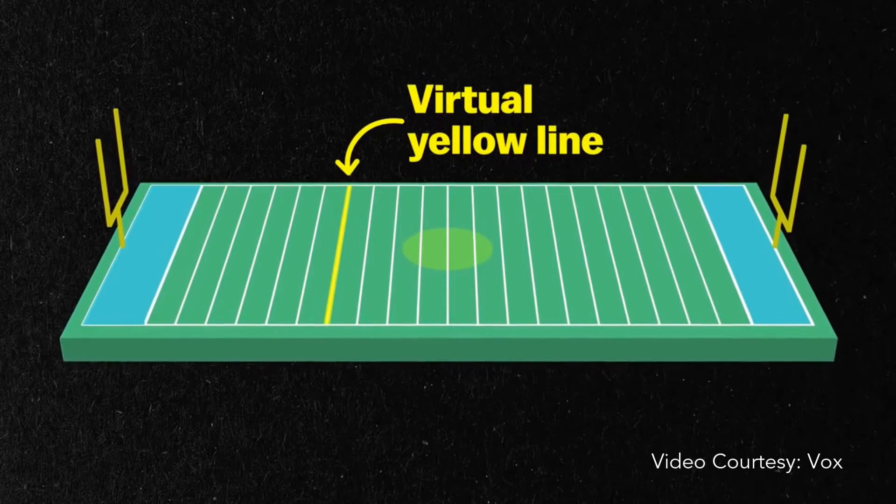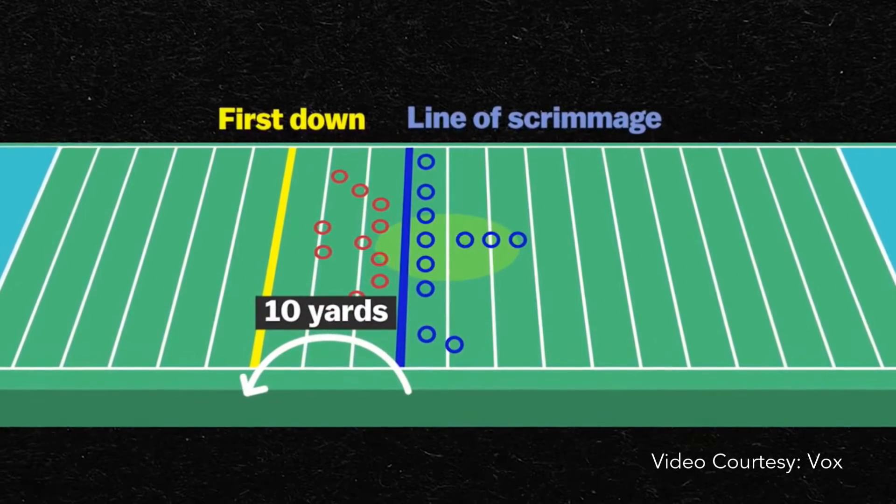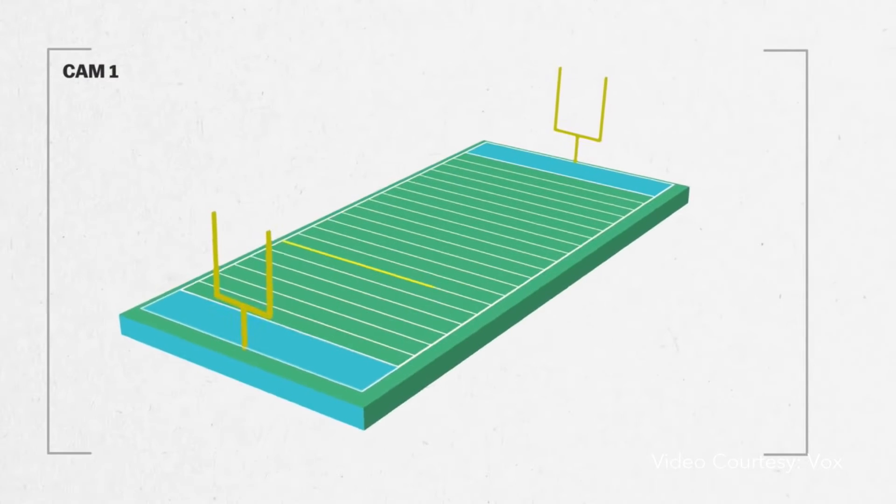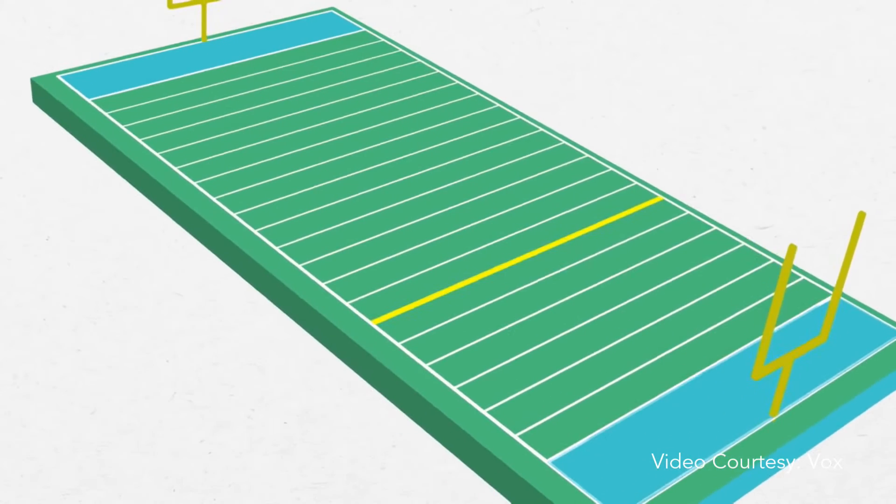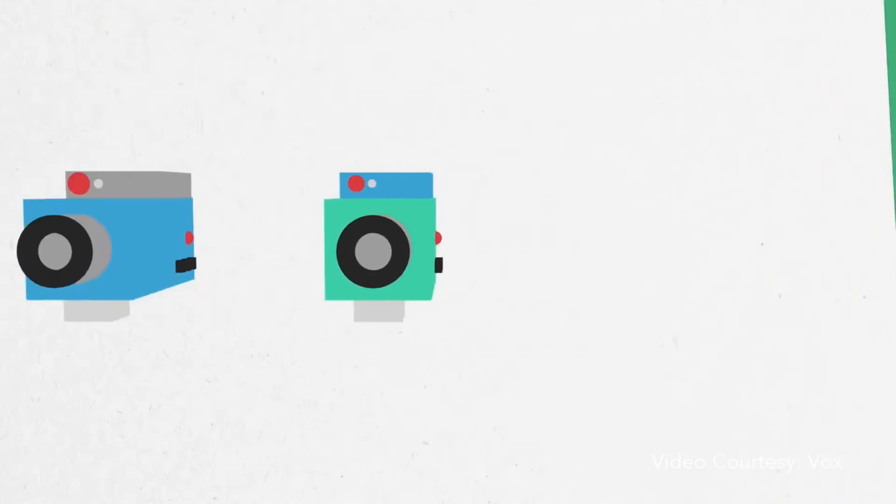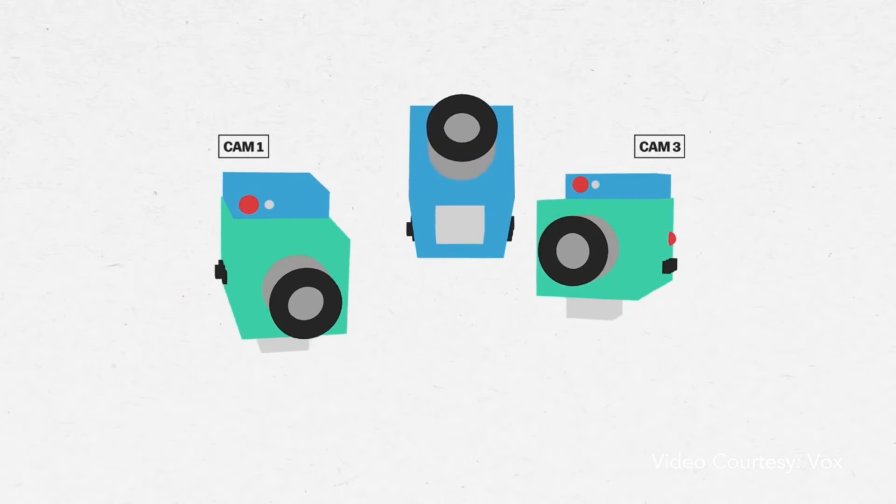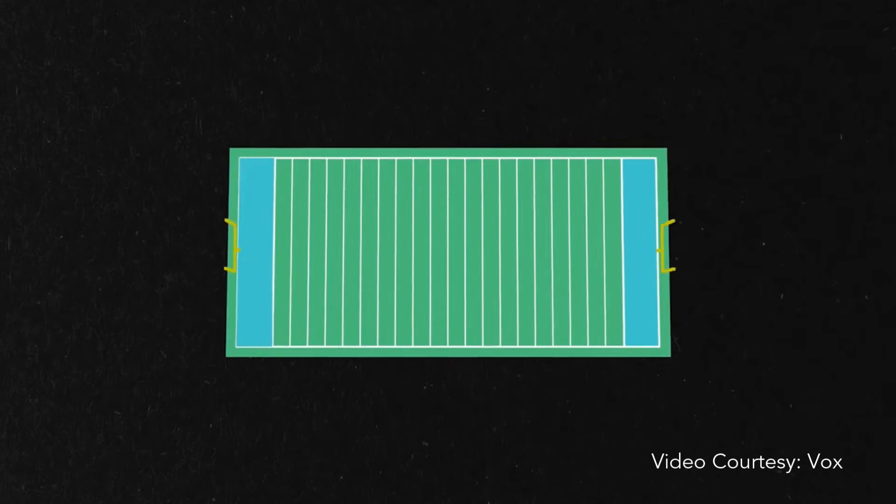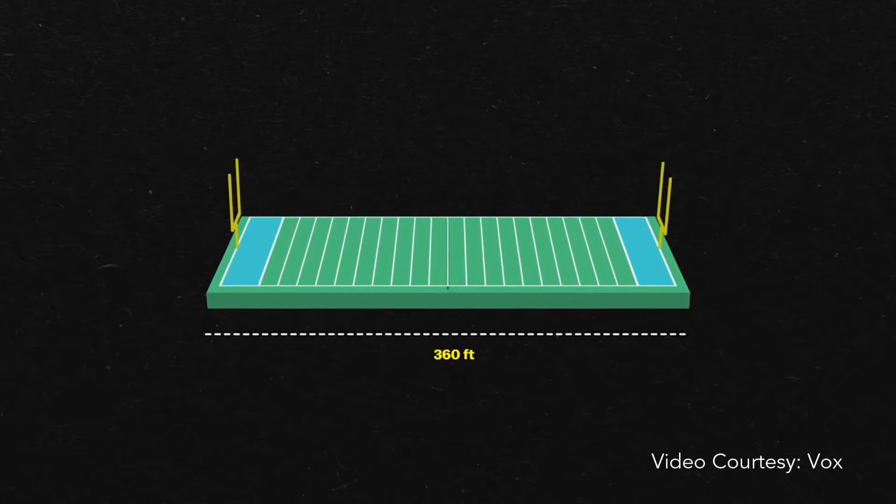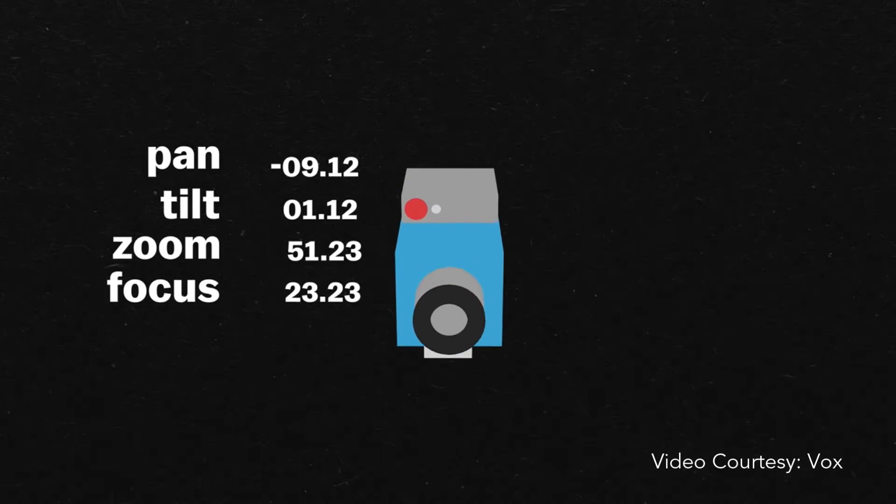The virtual yellow line in NFL broadcasts is great. It tells viewers how far the offense needs to advance for a first down. The key challenge in making the yellow line is that the scene is constantly changing, which means that the yellow line has to constantly change. Not only are there three different cameras used for wide shots of the field, each camera pans, tilts, and zooms to follow the action. So the first thing Sport Vision does before the game is create a 3D mathematical model of each football field using laser surveying tools. And during the game, they gather data from the cameras about their pan, tilt, and zoom positions for every single frame.